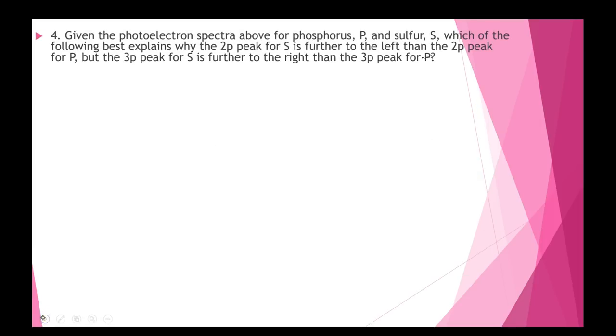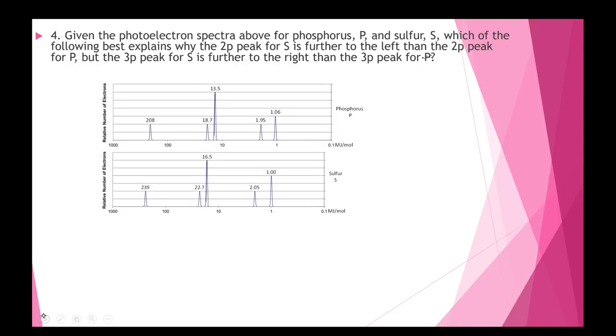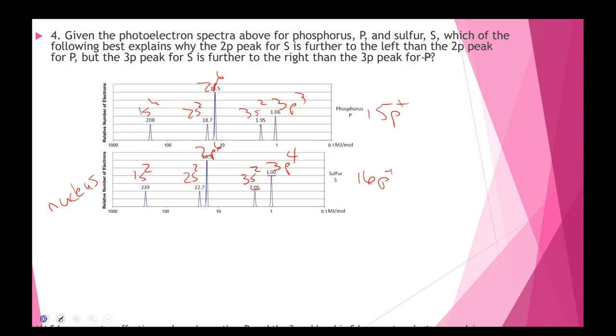Next one. So now I'm going to show you one for phosphorus and one for sulfur. Let's remember sulfur has 16 protons. Phosphorus has 15 protons. Again, the nucleus is over here. So these two peaks are 1s2, 2s2, 2p6, 3s2, 3p, it's twice as tall, makes it four. This one's 1s2, 2s2, 2p6, 3s2, and 3p3 because it's only one and a half times as tall.